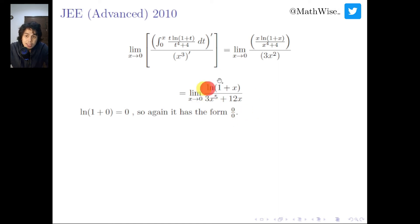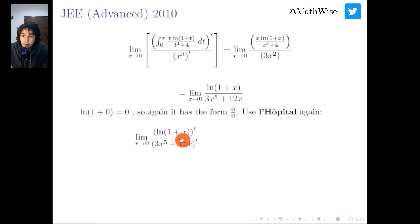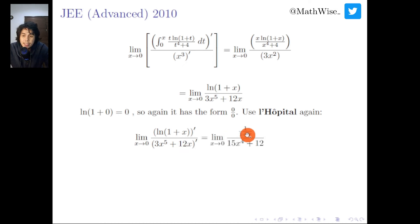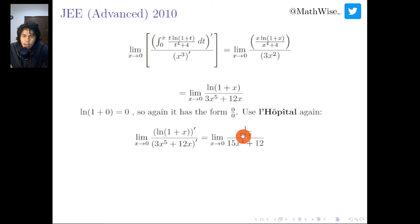We apply L'Hôpital again. The derivative of ln(1+x) is 1 over (1+x), and the derivative of 3x to the power of 5 plus 12x is easy to compute. Plugging in x equals 0, the numerator is 1 and the denominator is 12, so this limit equals 1 over 12. L'Hôpital is successful.